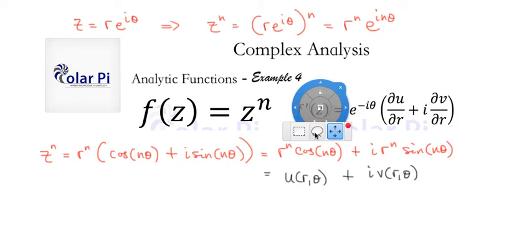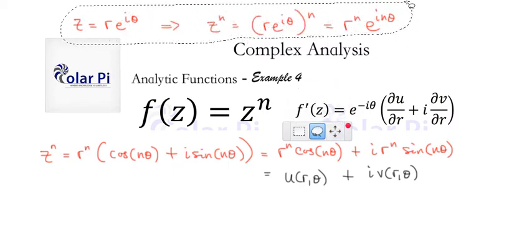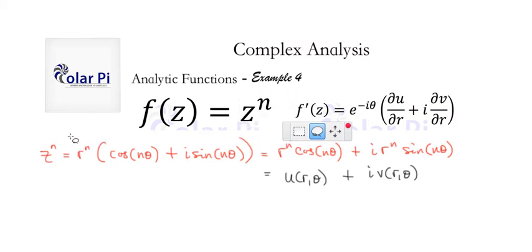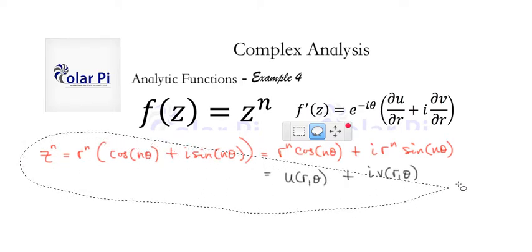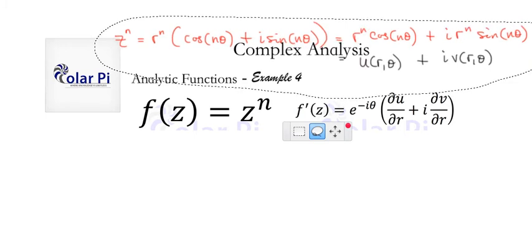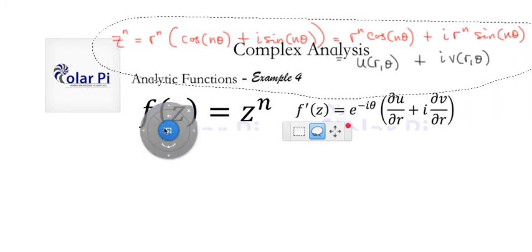So since we no longer need this, just keep in mind that z is r times e to the i theta. You know that. But yeah, let's get rid of that and find the partials we need and get on with finding f prime.